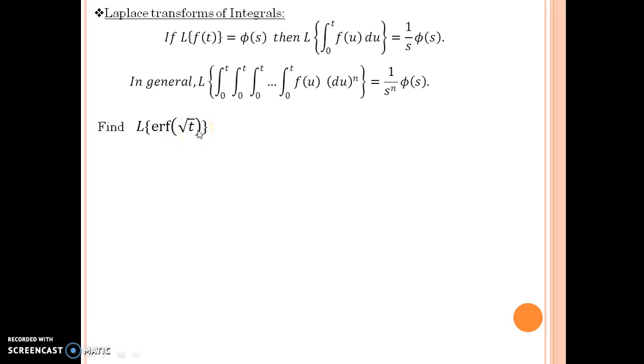We have already seen the definition of error function of root t. I have shown you the definition of error function of t as well as mentioned that you have to replace t by root t for the definition. So here it was t, then you replace it. If it is root t, you replace it by root t. Now the definition of error function of root t is 2 upon root pi integral 0 to root t e to the power minus u square du.